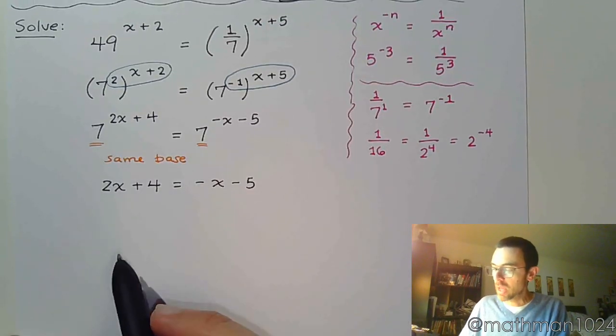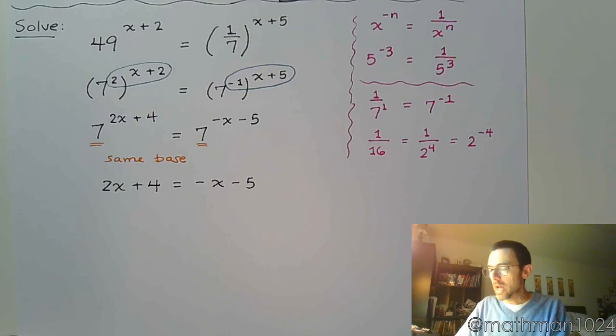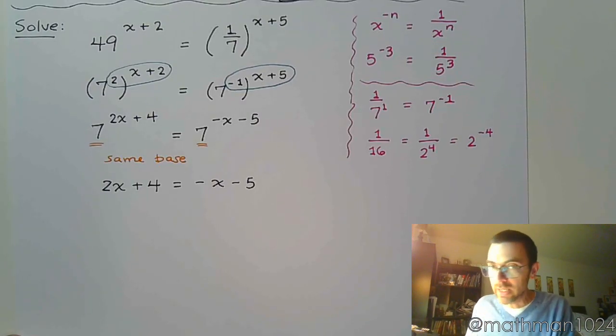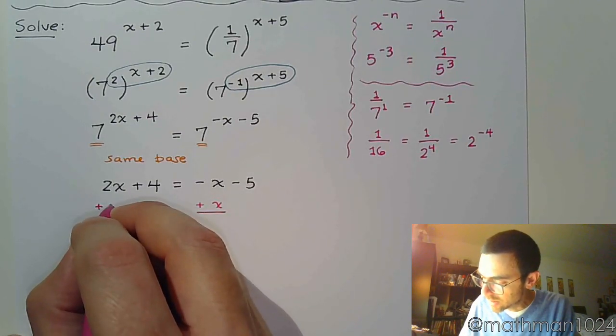All right. So now that we have this equation, it's linear, of course, I want to get all of the x's to the same side. The easiest way is to add x to move it from the right to the left.